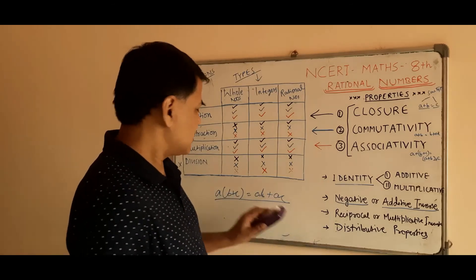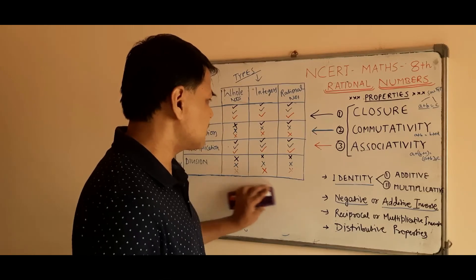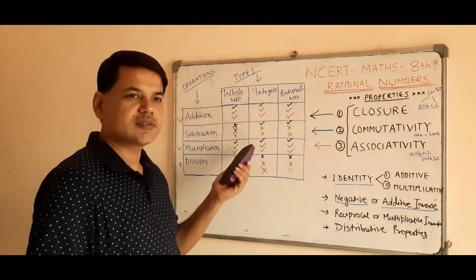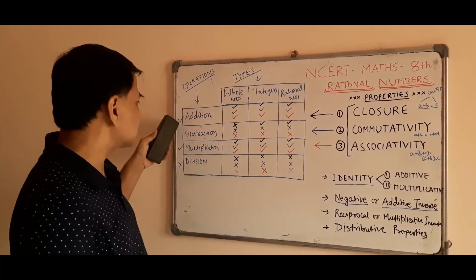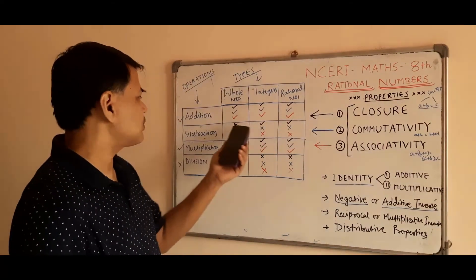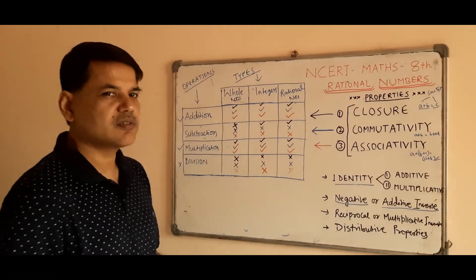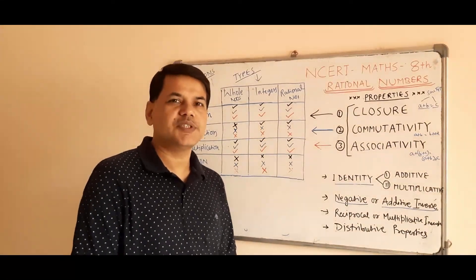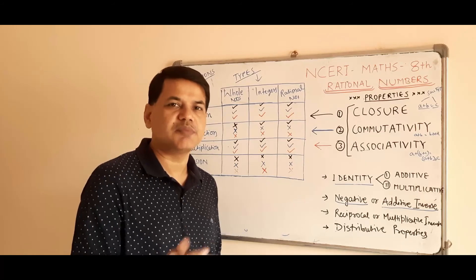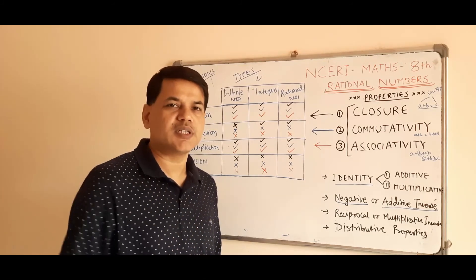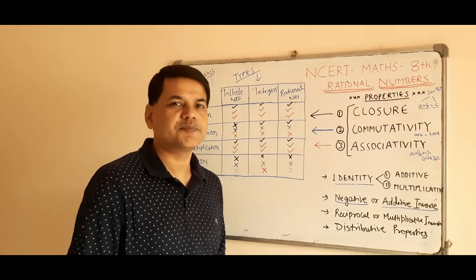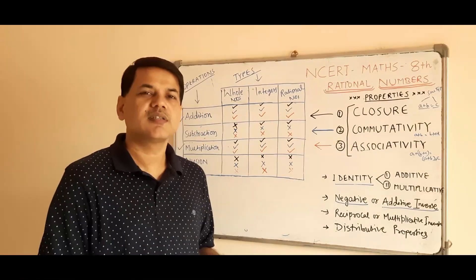I hope this is useful. Now you know what the different properties are, and you have this cheat sheet to quickly refer to. The shortcut to remember: for addition and multiplication, everything is true; for division, everything is false; for subtraction, only closure property for integers and rational numbers is true — everything else is false. Thank you so much for watching. If you have any questions, comments, or want a particular chapter or topic covered on priority, please comment and we will try to bring that to you first. Thank you.